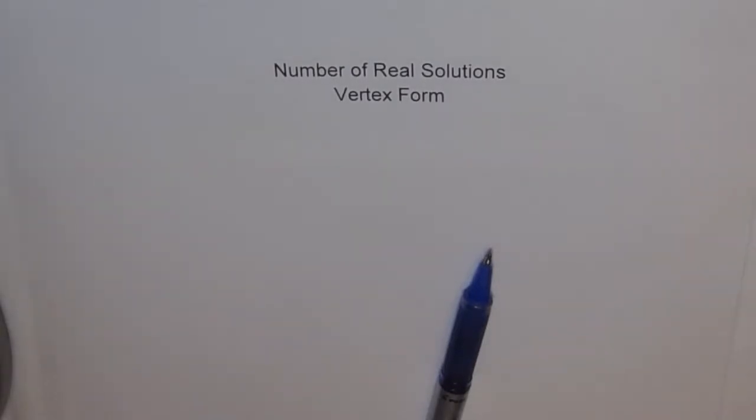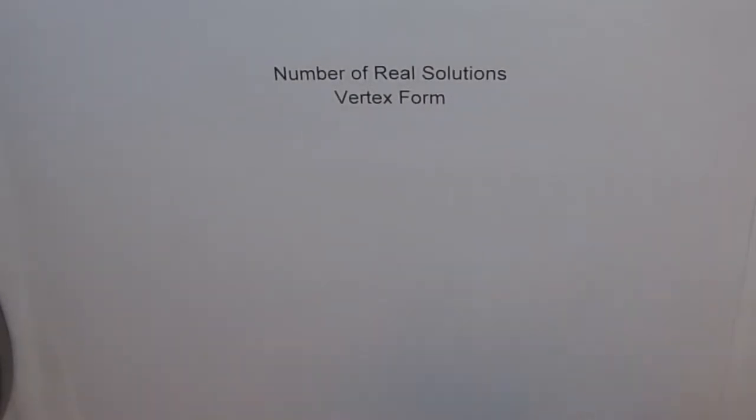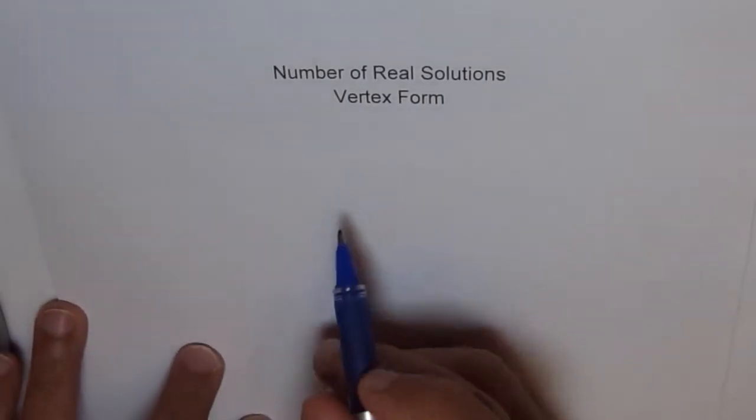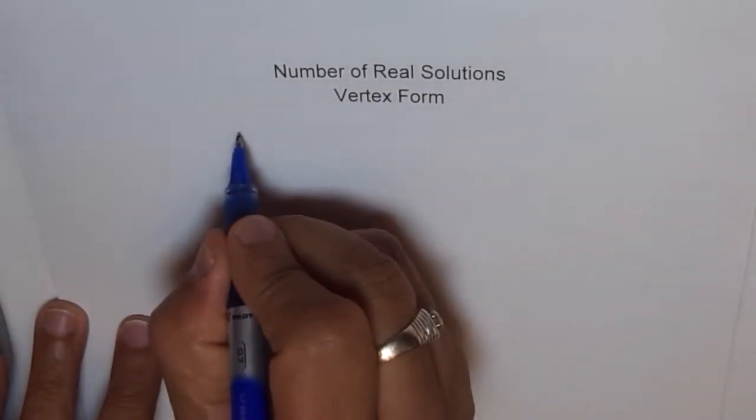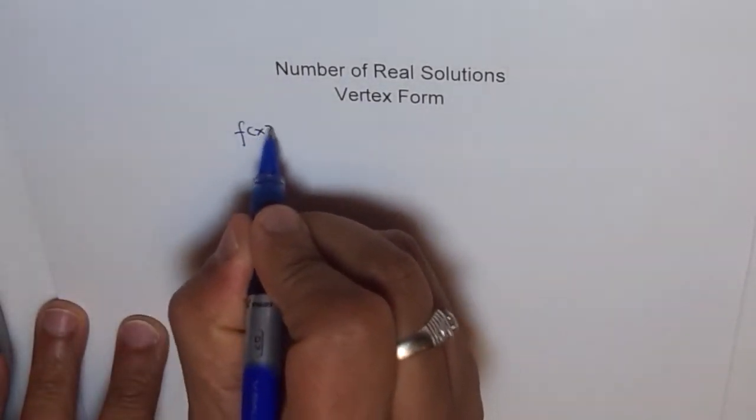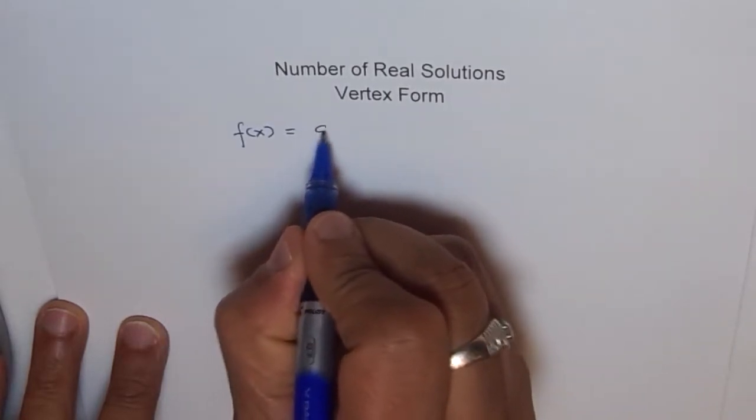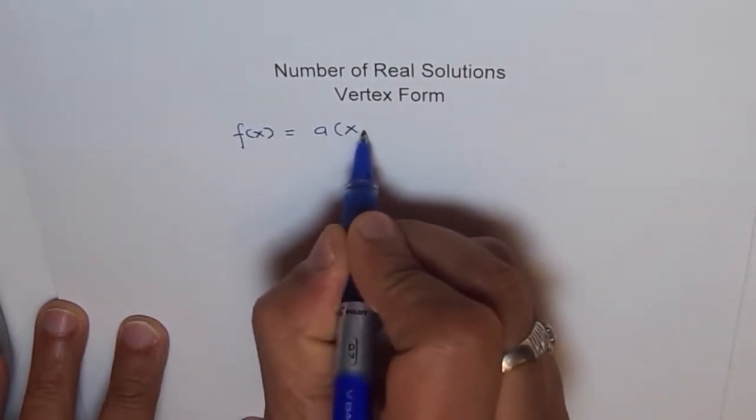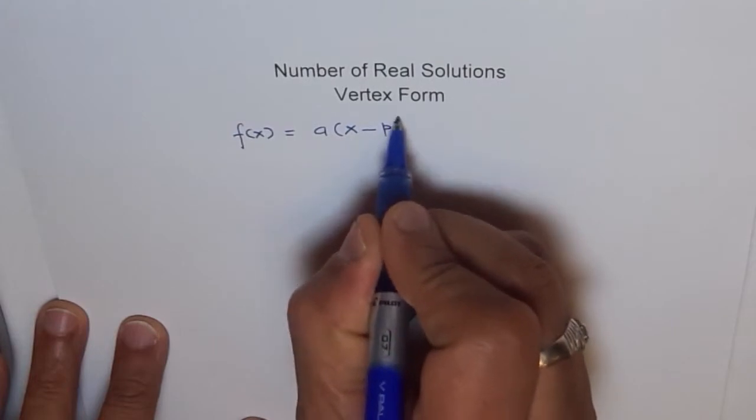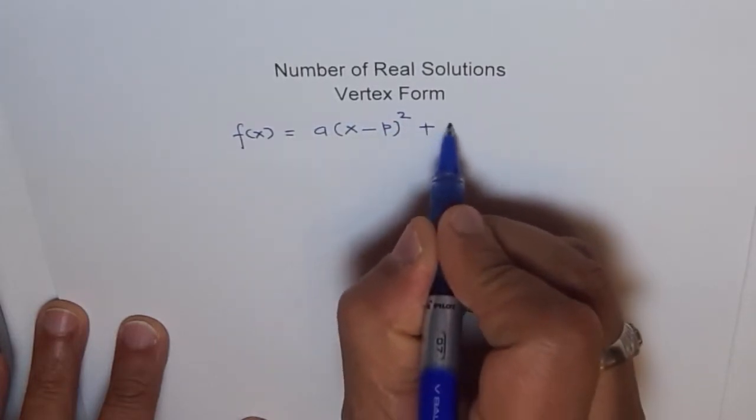Hello, let's discuss the number of real solutions when a quadratic function is given in vertex form. I hope you remember the vertex form of quadratic relation. We can write this as f(x) = a(x - p)² + q.